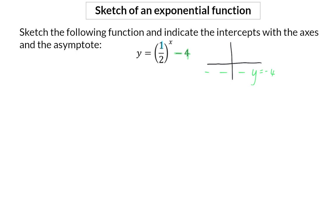Next, if we have a look at the b-value of a half, which is smaller than 1, I know that this will be a decreasing graph, and clearly now I'll have to determine an x as well as a y-intercept.